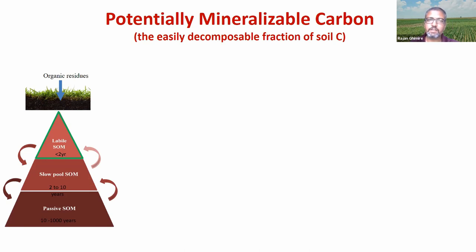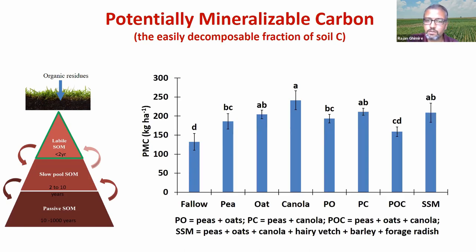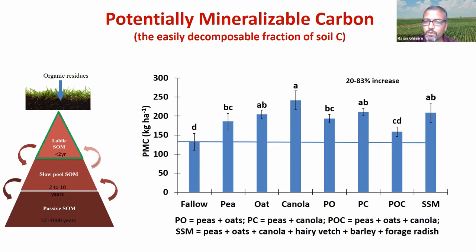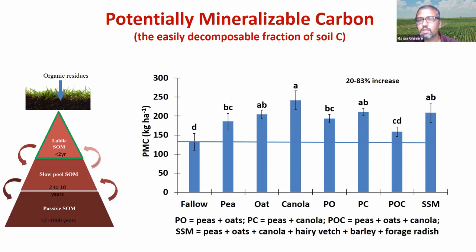We focused on the labile fraction and looked at its response. On this figure I am showing fallow as the first bar, and then all cover crops. This labile organic matter — mineralizable carbon — shows a 20 to 80 percent increase with cover cropping. This is third and fourth year data, so within three to four years we could see a very good increase in that labile fraction of soil organic matter.